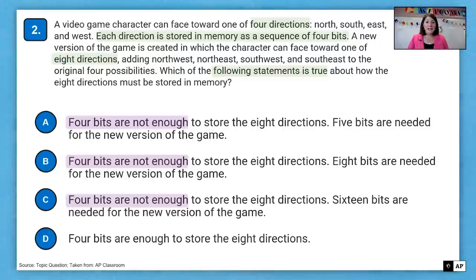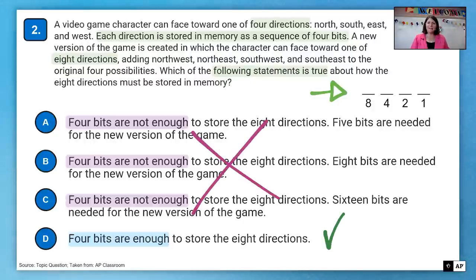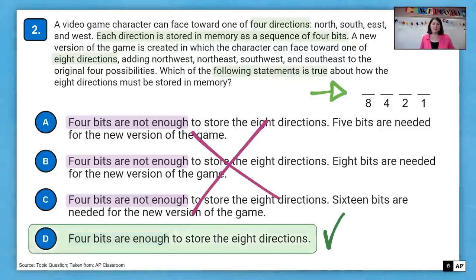So remember, on the AP exam, you can write on your questions or you can write on your scrap paper. And so you want to maybe write down your bits and your powers of two. So for four bits, remember, we can put zero or one for each of them. And so if we had them all as ones, we would be able to have eight plus four plus two plus one, which adds up to 15. And so therefore, that clearly would be able to hold eight values. And so four bits are enough to hold our eight directions.